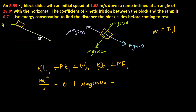On the right side, KE2 equals 0 because the block comes to a stop. The non-conservative work term is actually negative because friction removes energy from the system. And PE2 is negative mg times height, since the block ends up below the reference point.